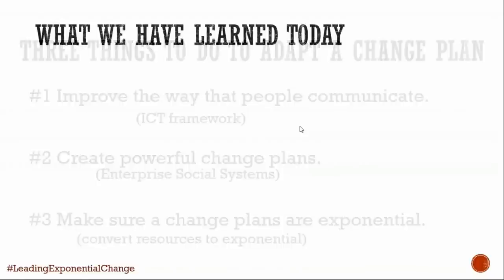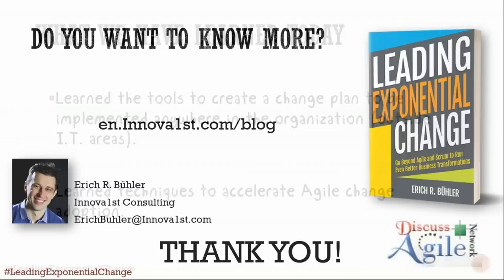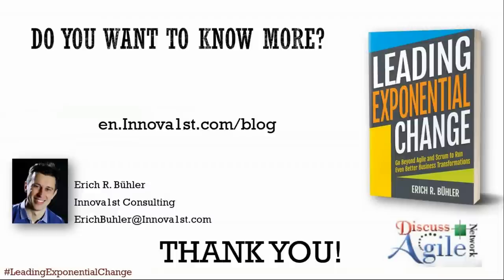We have still two or three minutes to answer some questions. The rest we can take offline. Let me check the question box. The first question: during transformation, since it's a radical change, what happens during the many convergent periods, and how is it different from the convergent periods during incremental change? During transformation, people feel very uncomfortable — they don't feel very safe, and there is generally a fear of what's coming next.